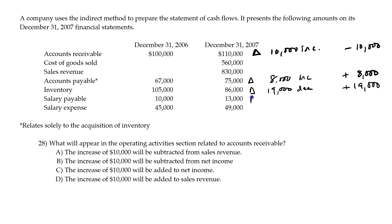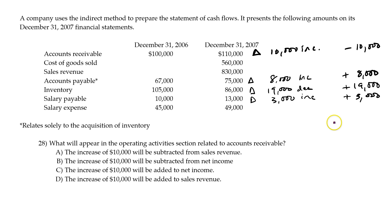Salaries payable is a liability and it increased, so we add increases in current liabilities. The only thing we don't have here is a current liability decrease. If we had a current liability decrease, then we would subtract that amount.